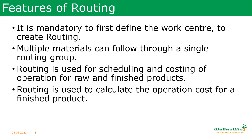The features of routing are: creation of work centers is mandatory because that is where production will happen — without that we cannot create the routing. Multiple materials can follow a single routing; for example, a sequence of cutting, welding, and finishing can be used by many materials. Routing is used for scheduling and costing of operations from raw material to finished goods. Routing is also used to calculate the operation cost for the finished product — not only material cost, but also the operation cost.